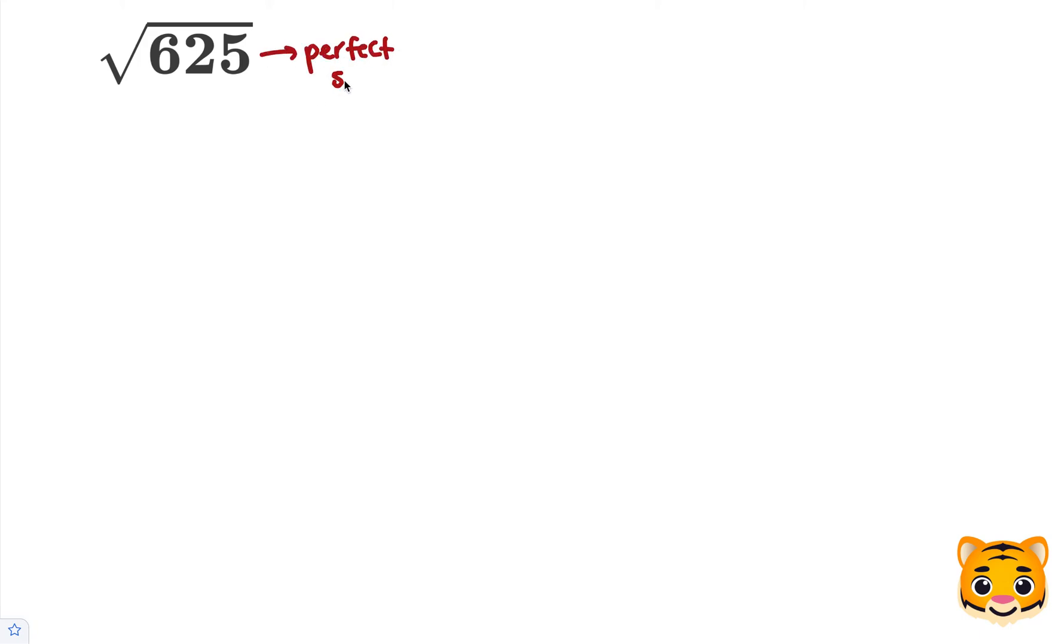A perfect square is a unique number where if you take the square root of your perfect square, you obtain a whole value or a whole number answer.